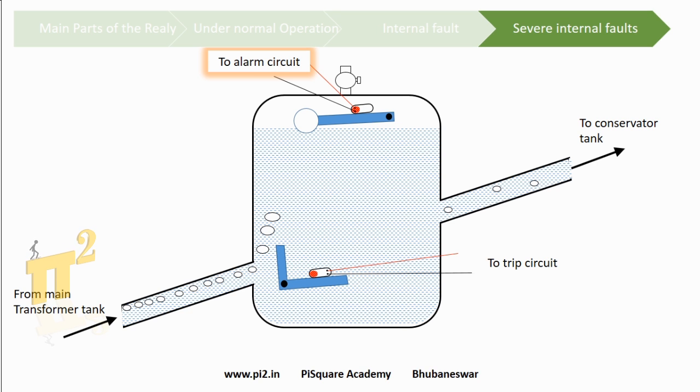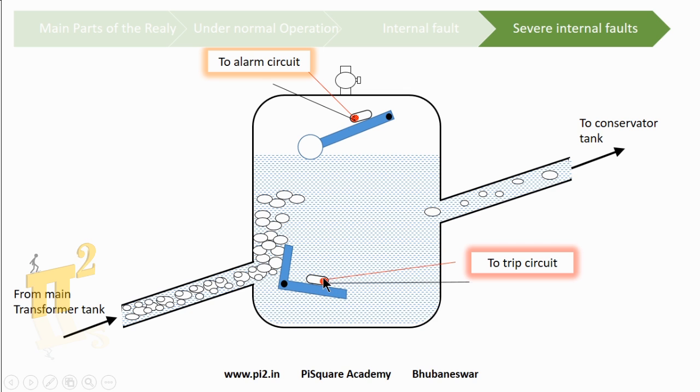If there is a severe fault, there is a heavy rush of gas which hits the baffle plate. This causes the mercury switch to engage the trip circuit, which will then activate the circuit breaker.